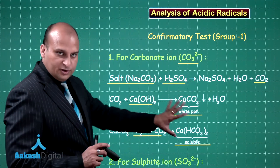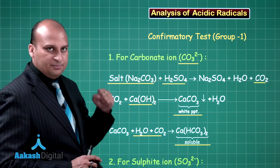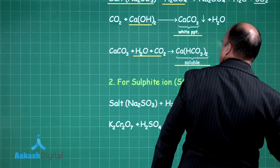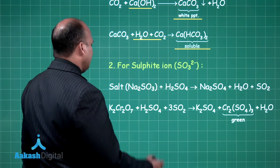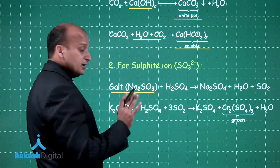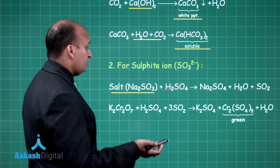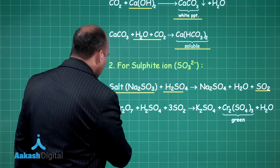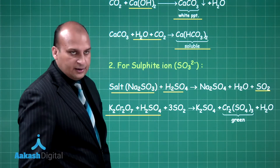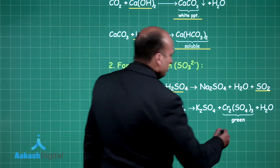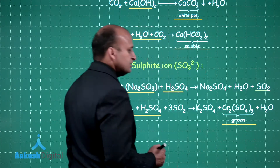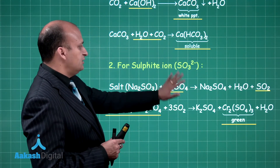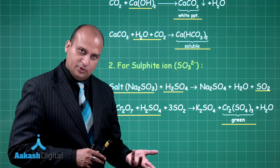Similarly, for the sulfite ion: you take the salt and add H2SO4 to get sulfur dioxide. To the sulfur dioxide, you add potassium dichromate — it gives chromium sulfate, which is green in color. The solution turning green confirms the presence of sulfite ion.